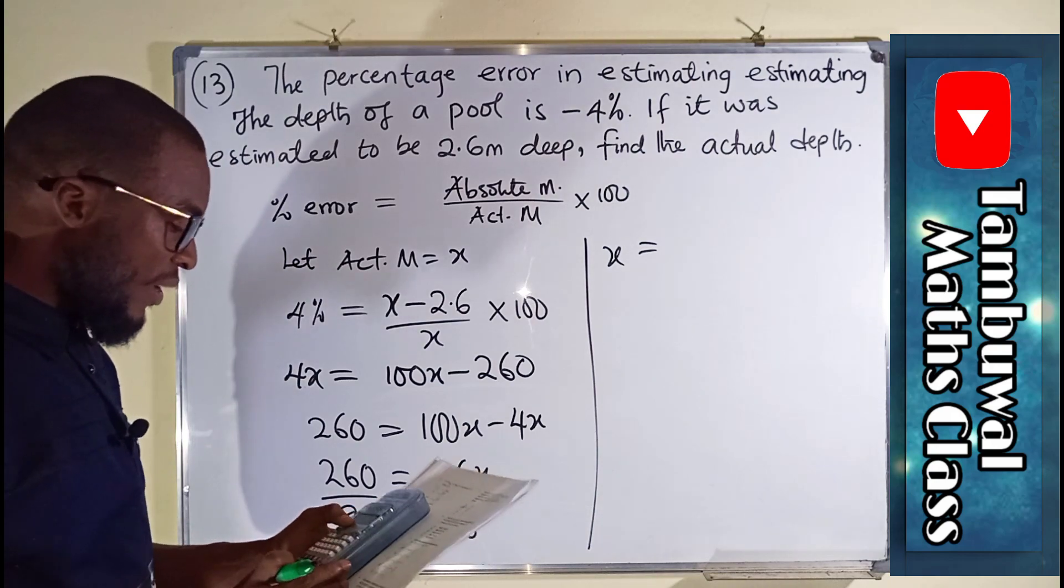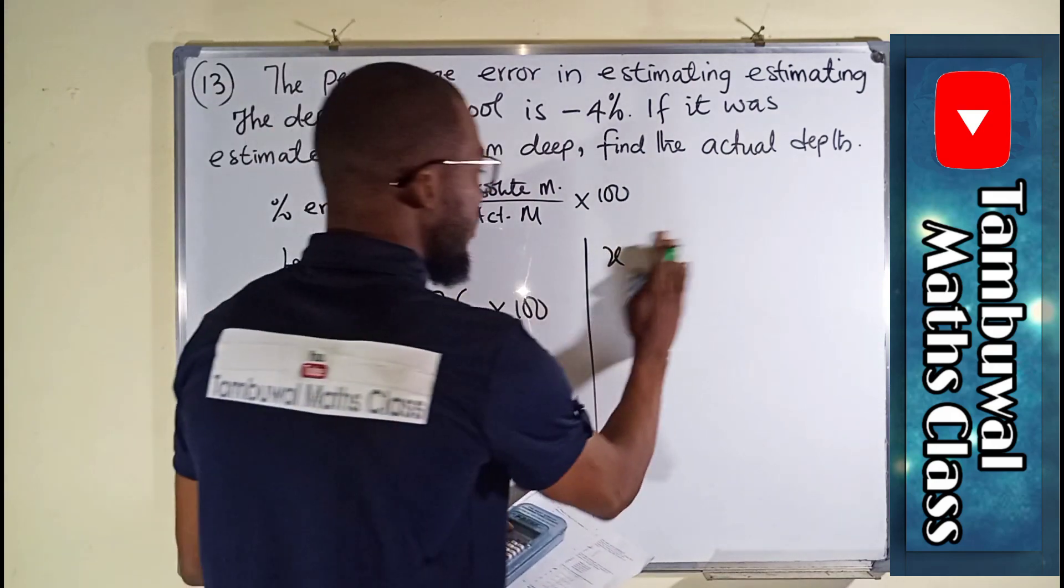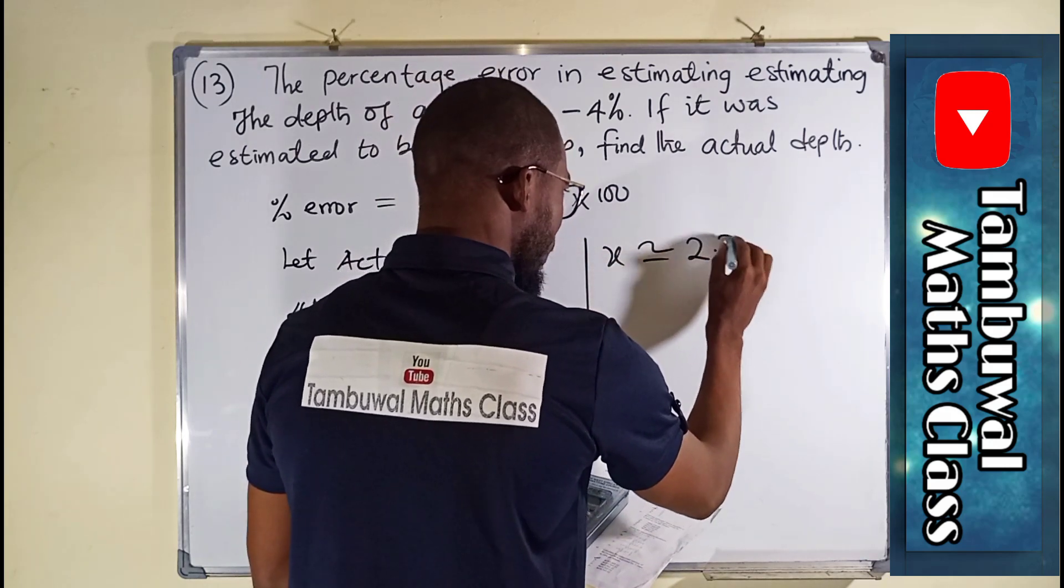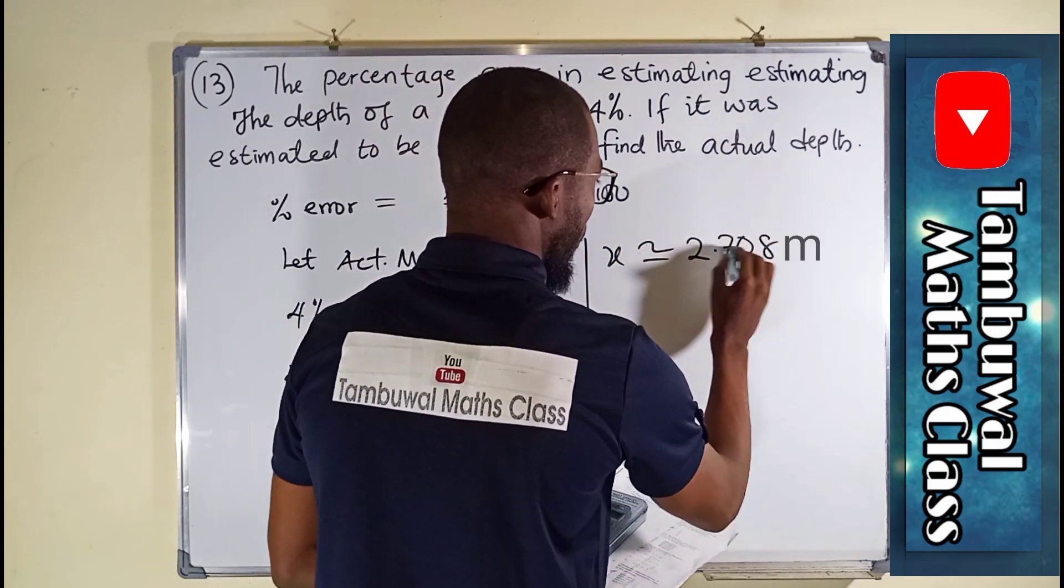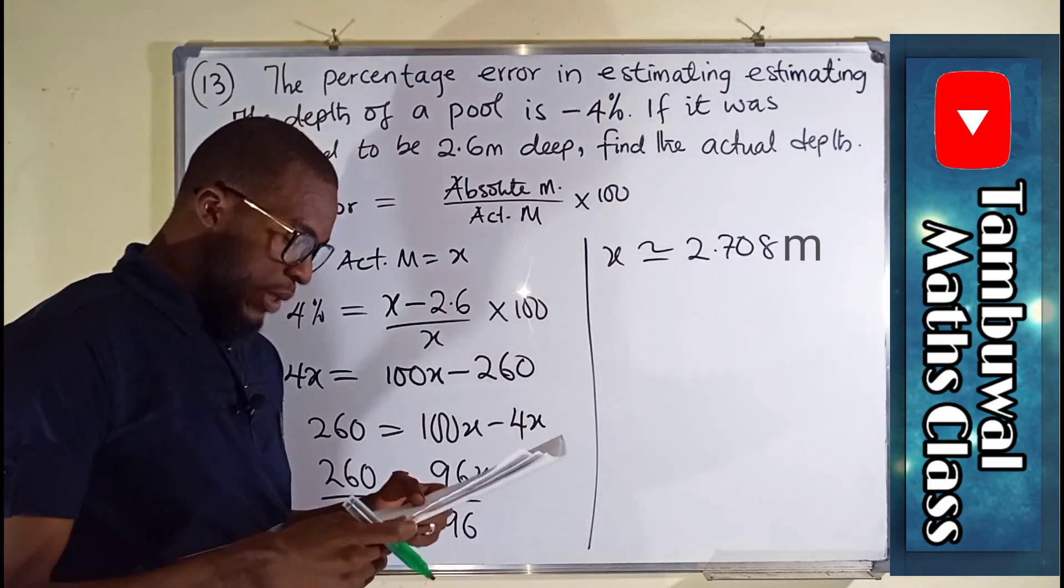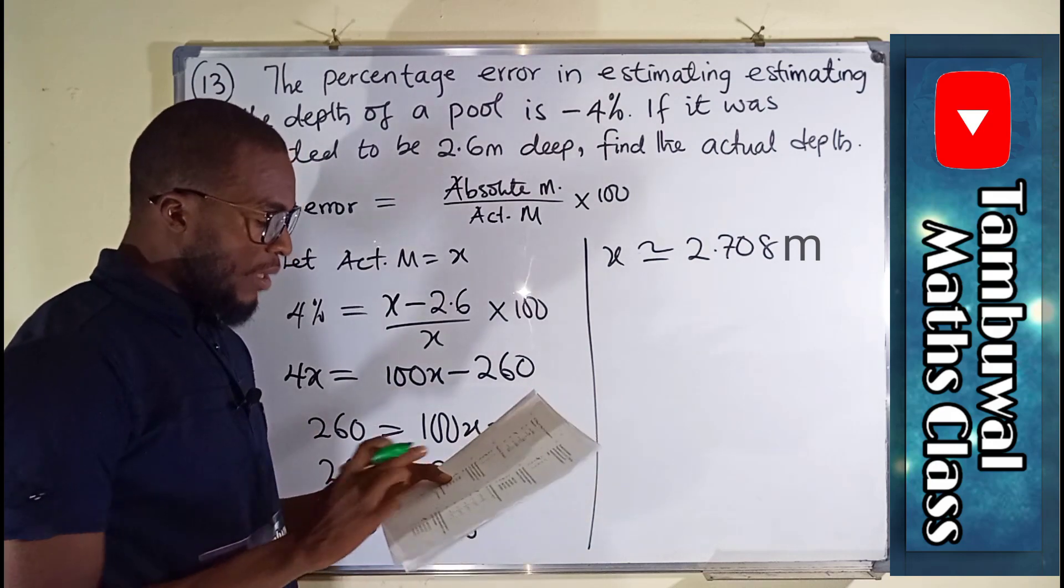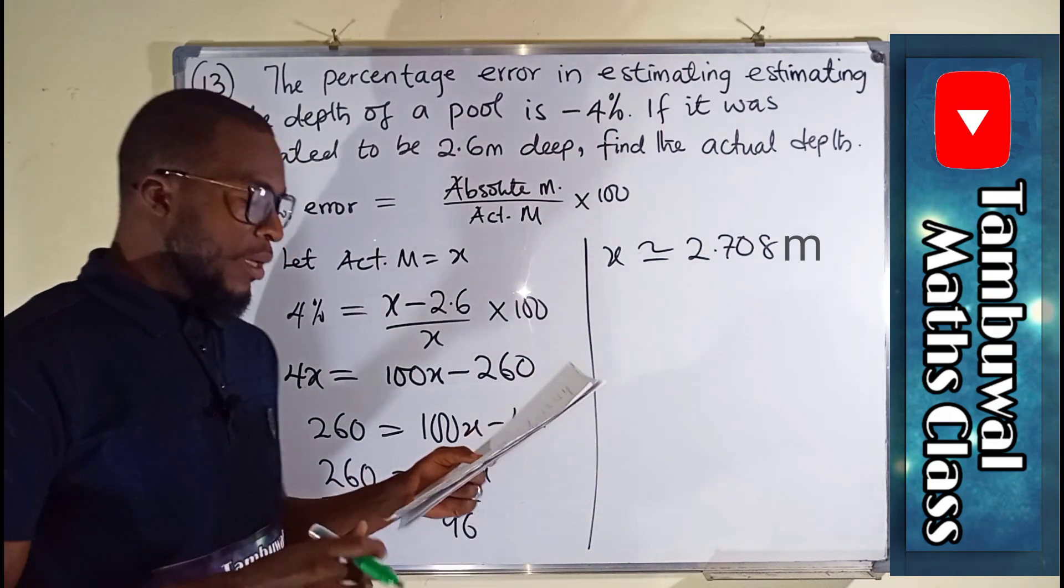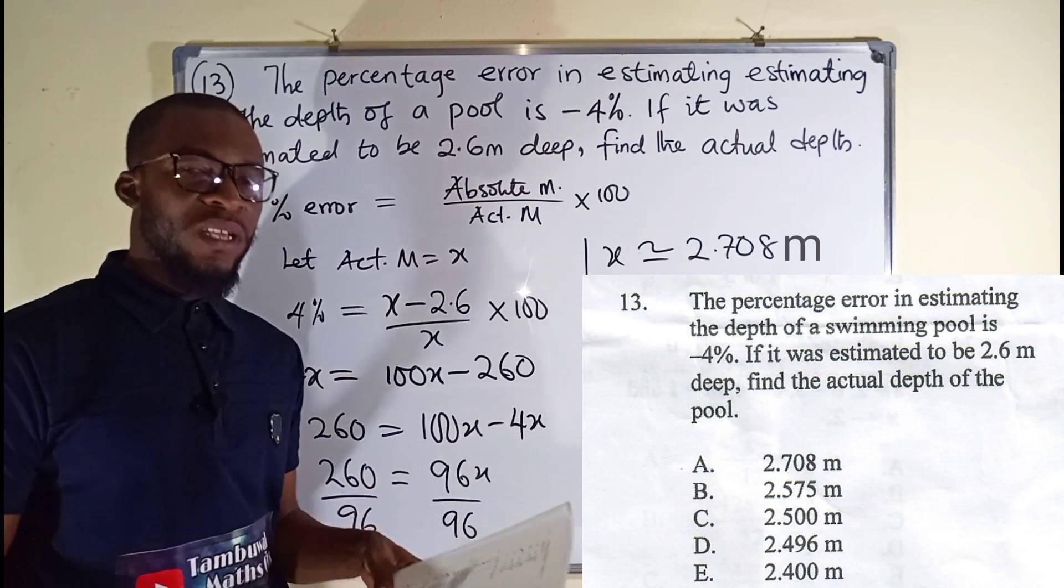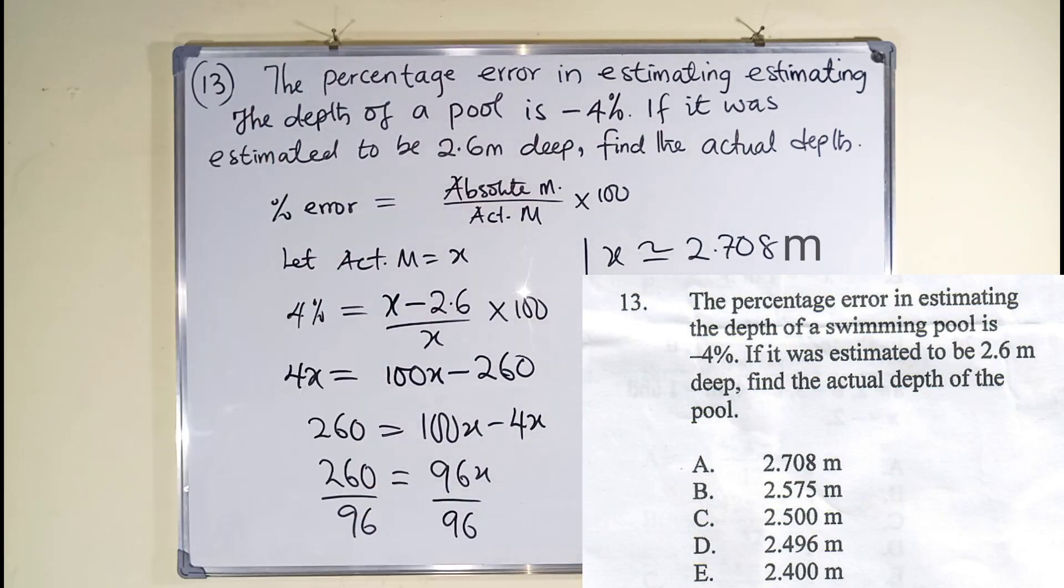We have 2.708 approximately. And this is our actual measure. And this is option A here from question number 13. So now let us move on to question number 14. Thank you.